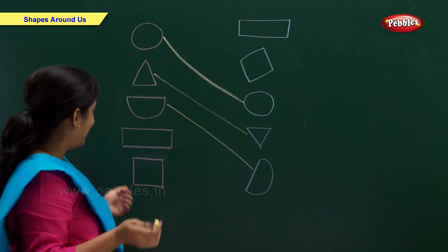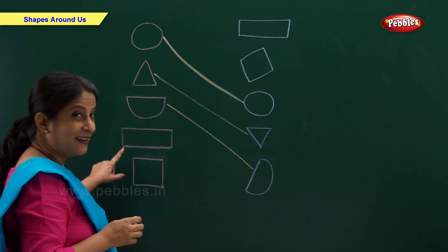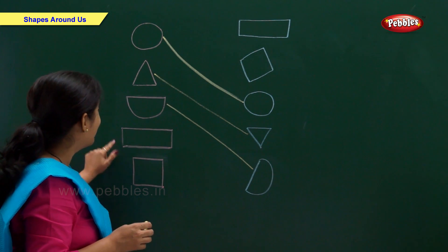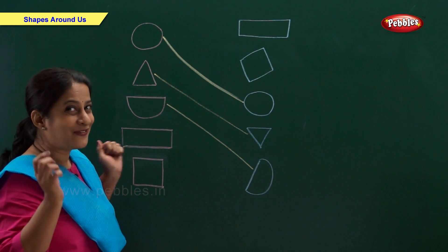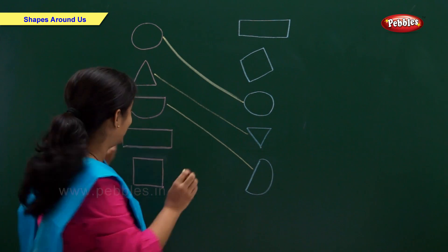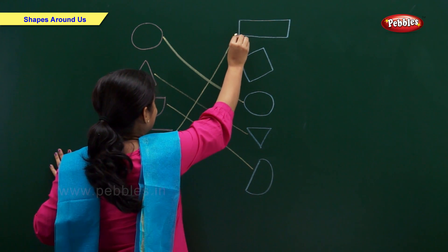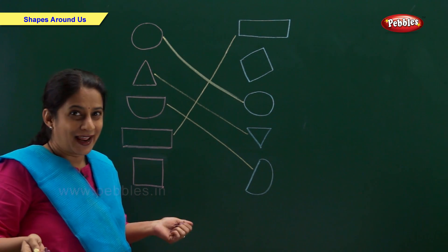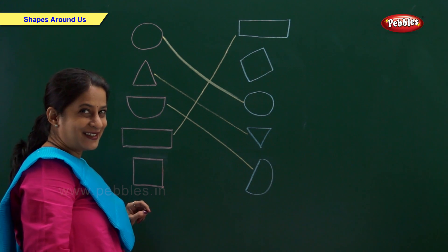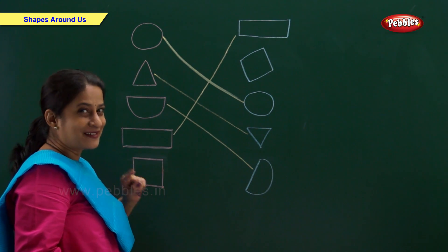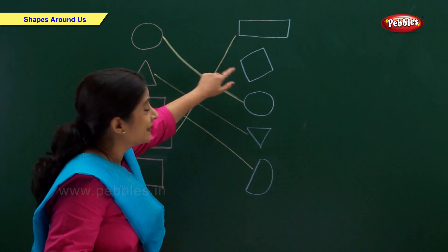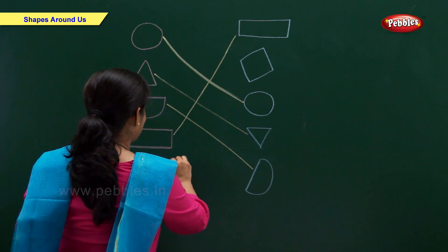And now we have a rectangle, so let's find rectangle — oh, it's here, let's match. Rectangle. And now, which shape is this? It's very simple — right, it's a square! And where is our square? Square, so let's match.